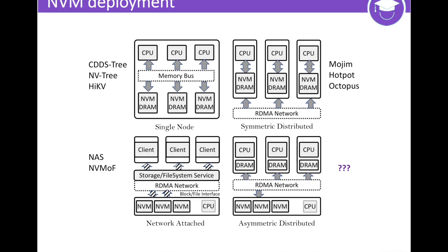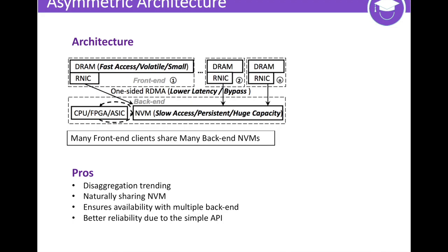These challenges are due to the nature of current NVM deployment. To fundamentally overcome the drawbacks, we rethink NVM deployment and propose the byte-addressable asymmetric NVM architecture. NVM devices are not associated with individual machines and are accessed at the byte level only via a fast network. In asymmetric NVM architecture, the number of NVM devices, which can be provided as specialized blades, can be much smaller than the number of machines. Compared to the symmetric architecture, asymmetric NVM architecture offers four advantages: it can enjoy the benefits of disaggregation, it naturally matches the desire of sharing NVM, it ensures availability with multiple back-ends, and the back-end node can be implemented in a simple manner that leads to better reliability.